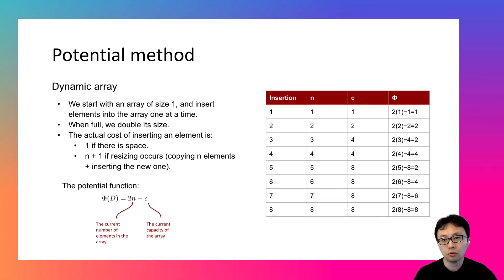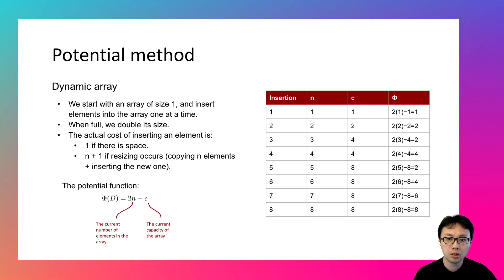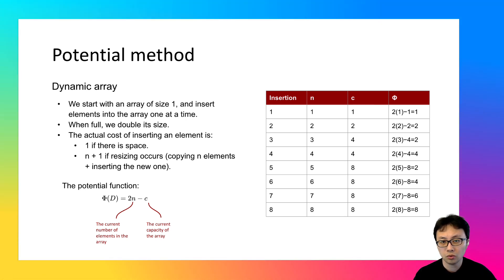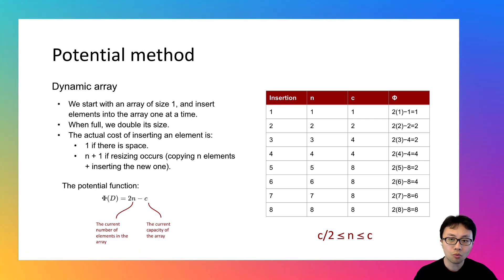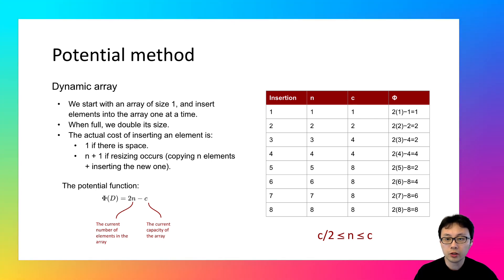Resizing happens when going from row 2 to 3 and from row 4 to row 5. In both cases, the potential computation does not go negative — the same holds for all other rows. As the state evolves, n can only be as large as the array capacity c, and that is when n - c is smallest. After each resizing, n is one more than c / 2, which is when n - c is largest. As such, the potential function always yields non-negative numbers, meaning the function is valid and usable.